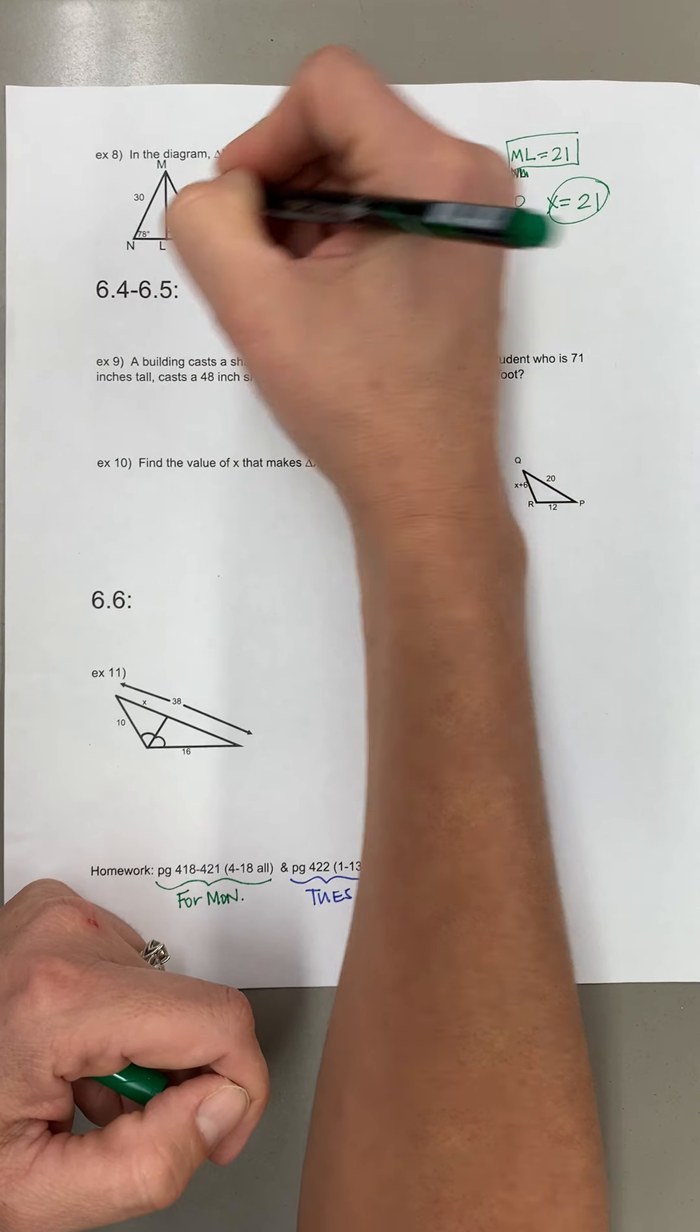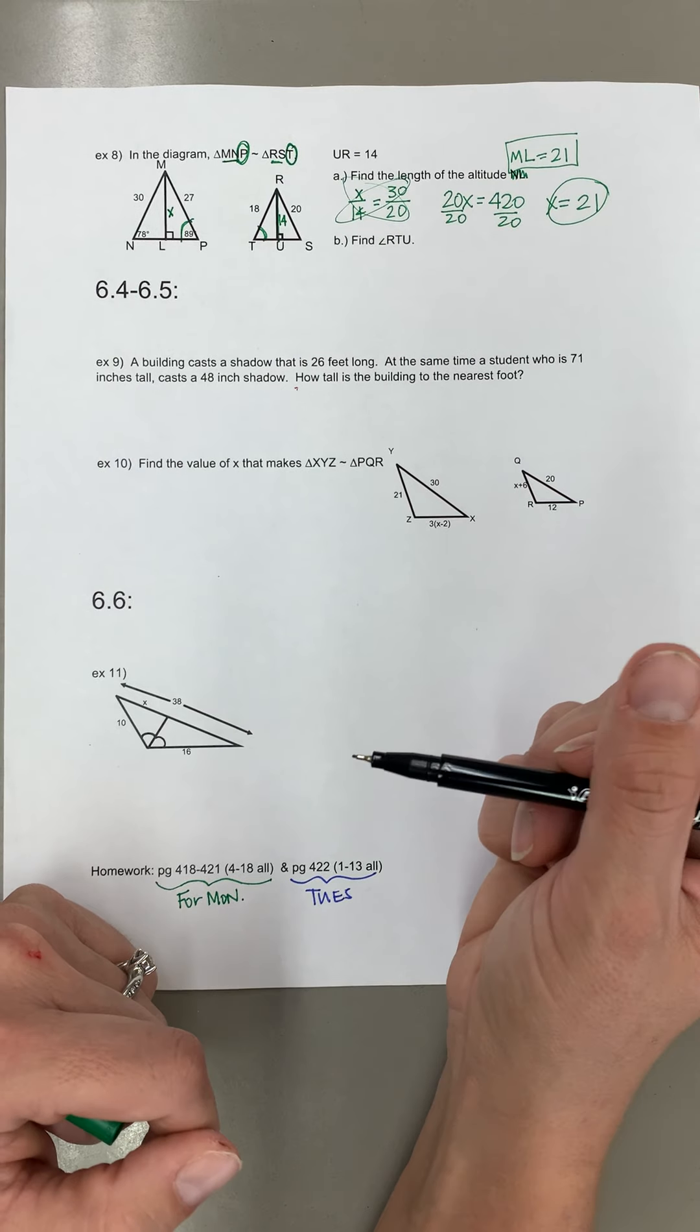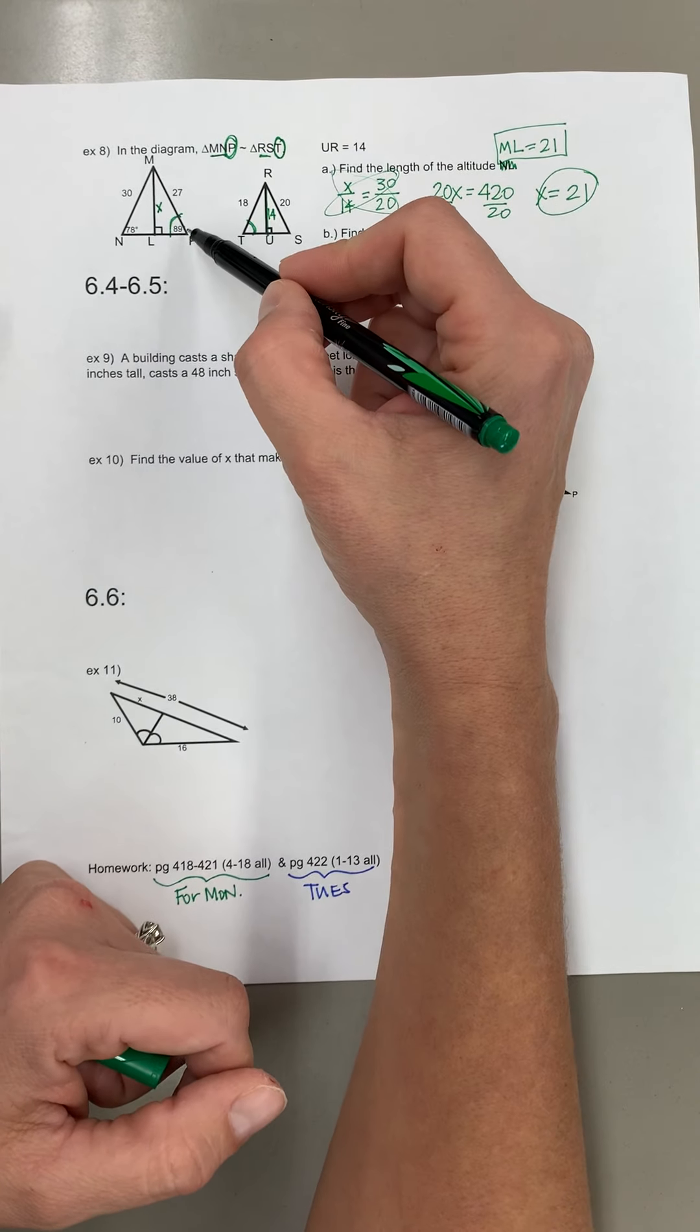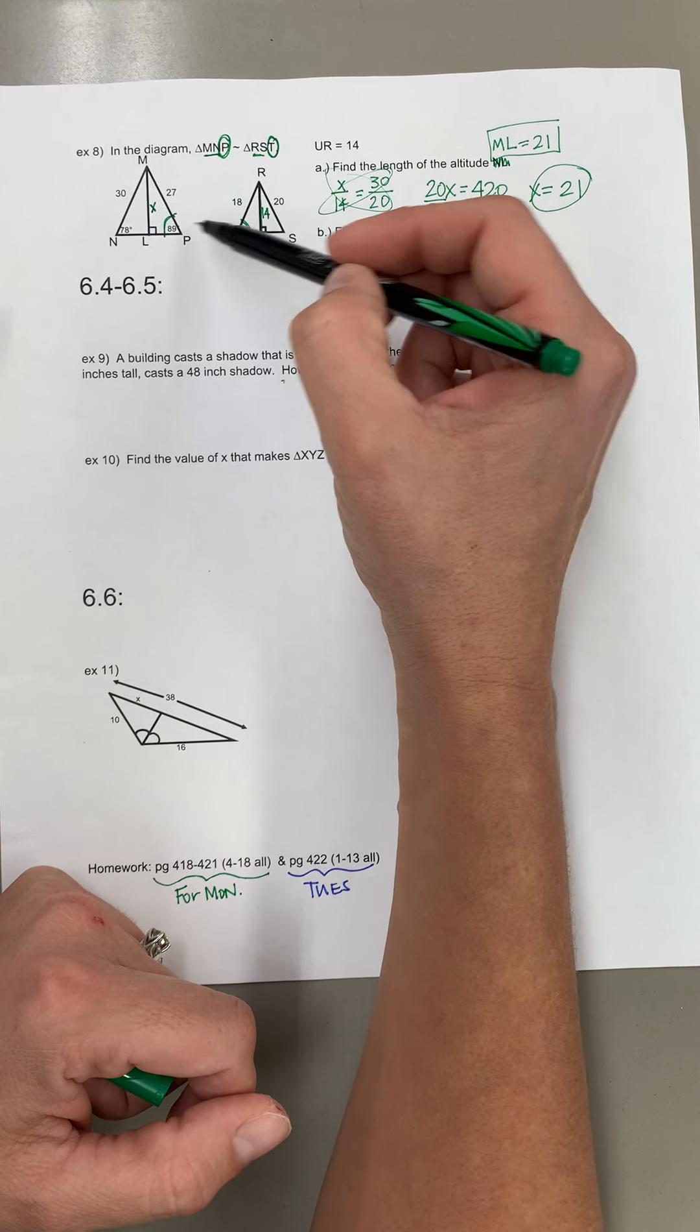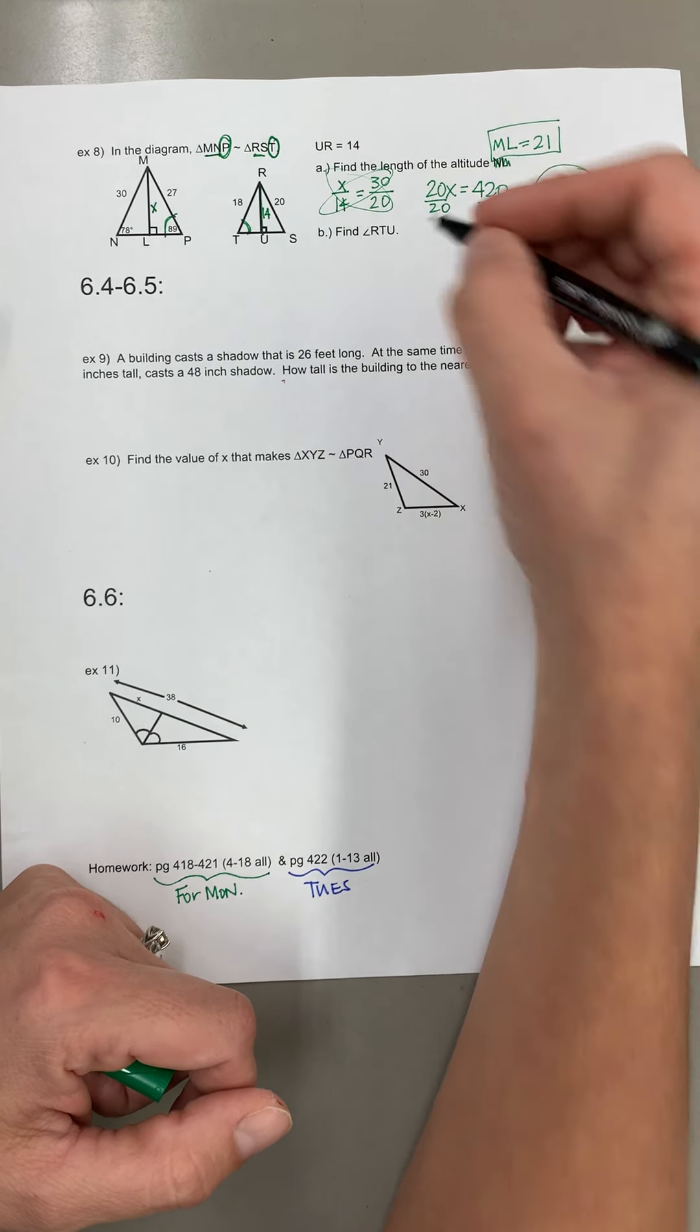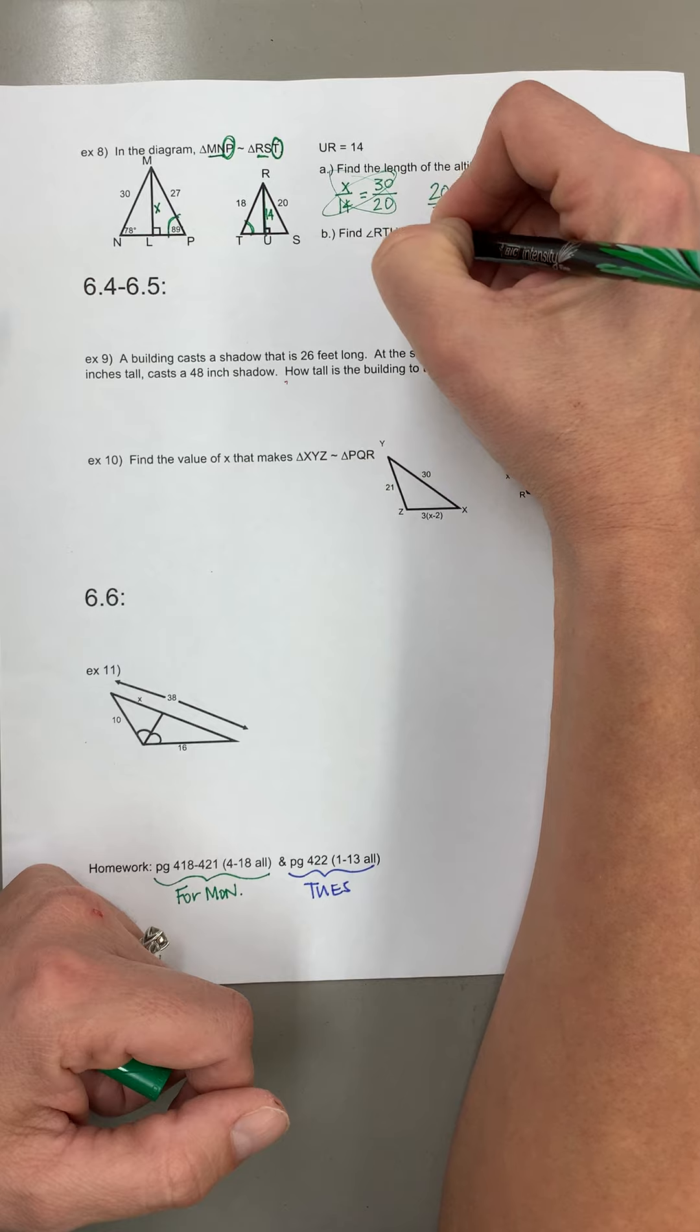So T and P are actually equal and just so you know that's a really bad drawing so I apologize that that says 89 because it shouldn't be but we'll just go with it. So this is T, this is P, they're equal. So this is gonna be 89 degrees.